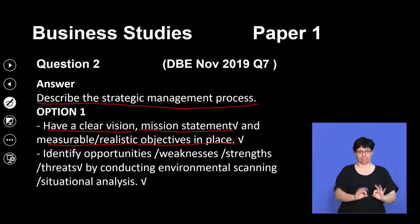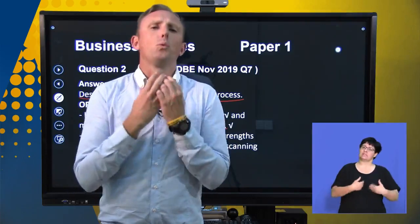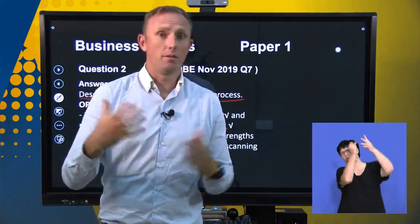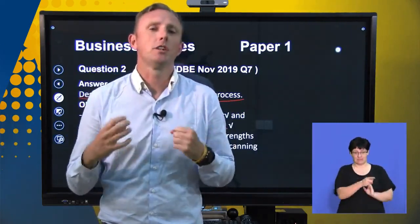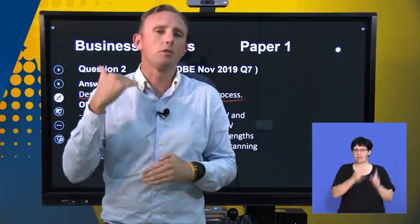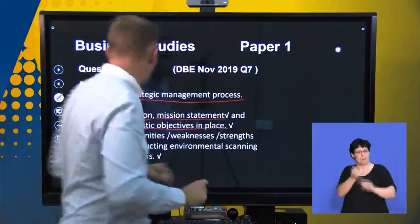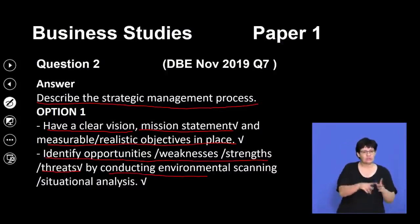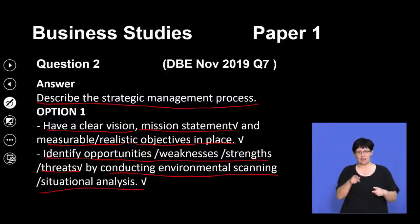Before you start any business, you have to see where do we want to see ourselves, how are we going to get there, and what are our goals. For matriculants, you should have a clear vision of what you want to achieve in your final exams. If you don't have a clear vision, you're never going to fully achieve what you should, because you don't know where you should be going. Second: identify any opportunities, weaknesses, strengths or threats by conducting environmental scanning or situation analysis.